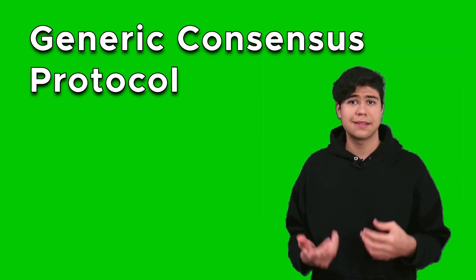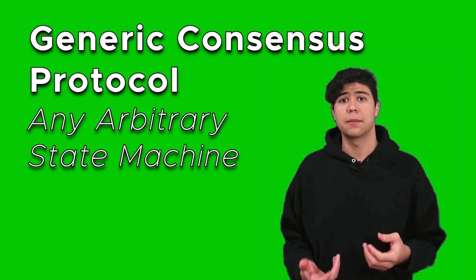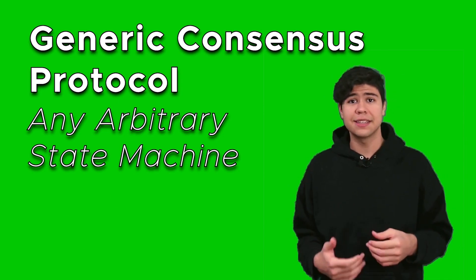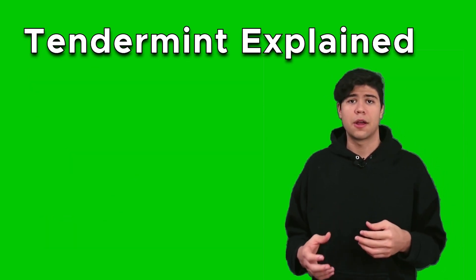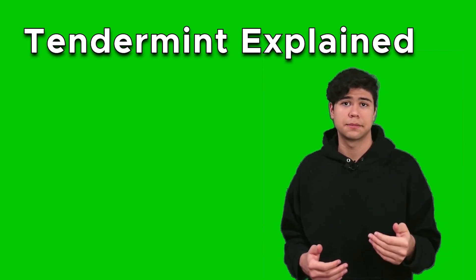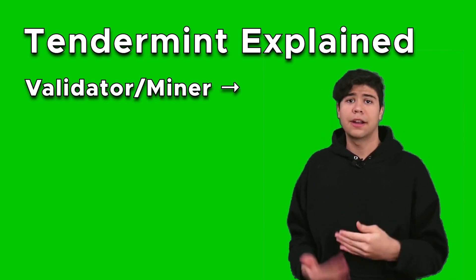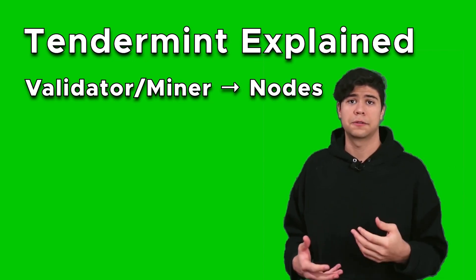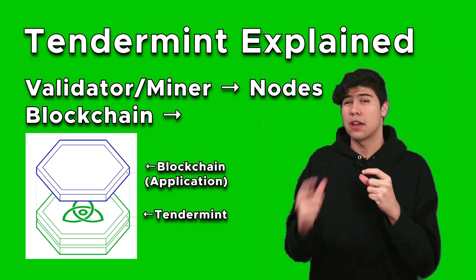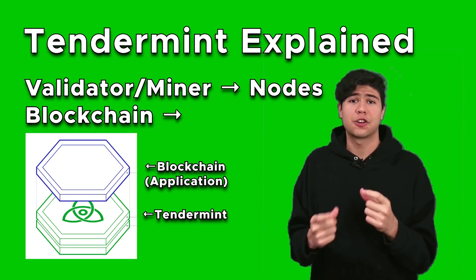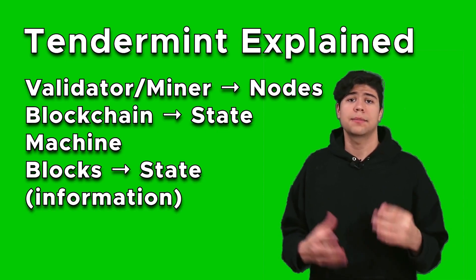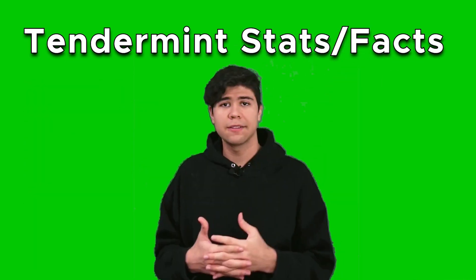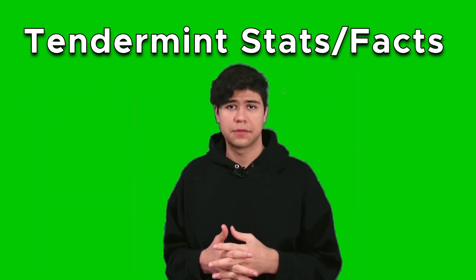The first thing you have to know about Tendermint is that it is a generic consensus protocol, which means it can run any arbitrary state machine. This means technically Tendermint doesn't have to be used for blockchains. Some blockchain terminology is replaced with consensus terminology: validators or miners are called nodes, the blockchain is called a state machine, and blocks are replaced with the term state — aka information.